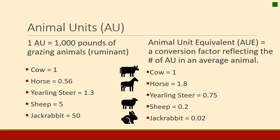It's also useful to think of this the other way, which we call an animal unit equivalent — a factor that reflects the number of animal units in the average animal. So a 1,000-pound cow is 1.0 animal units, a horse is 1.8 animal units, a yearling steer is a fraction at about 0.75 animal units, a sheep is 0.2, and a jackrabbit is 0.02.